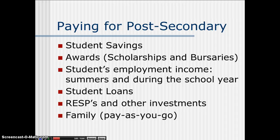When paying for post-secondary school, there's a variety of options. The first one is student savings. There are also awards through scholarships and bursaries. There's the student's employment income, either working through the summers or throughout the school year while attending university or college. There are student loans, which we'll say more about later. There are also RESPs — Registered Education Savings Plans — and other investments, which you'll want to discuss with your family. And lastly, there's support from your family who can help pay for post-secondary education if possible.